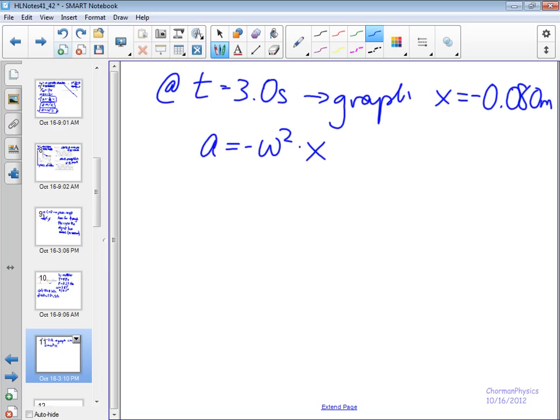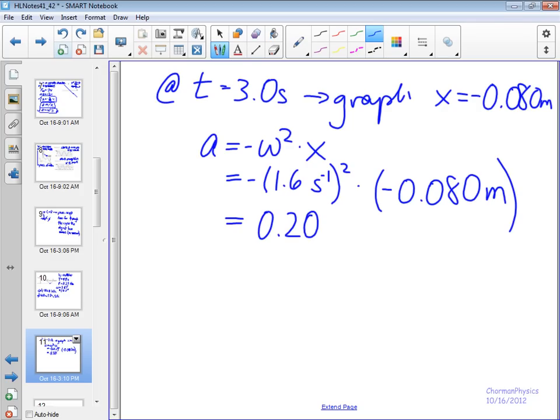Again, I'll be showing you in a little bit, probably in the next video. But here, we can calculate the acceleration, right? And we know the angular frequency is 1.6 radians per second, and that's squared times the displacement here. And when we do that, we end up with 0.20 meters per second squared, and that is positive. Those negative signs from the displacement and from the equation cancel out.